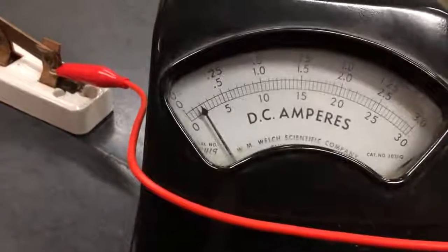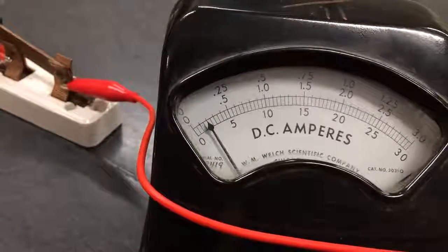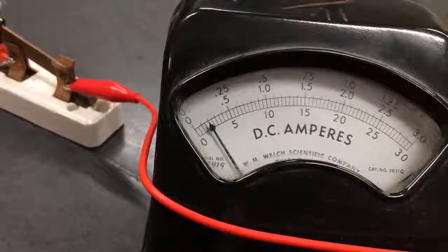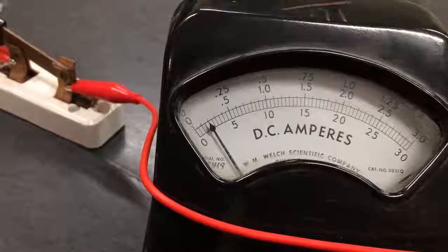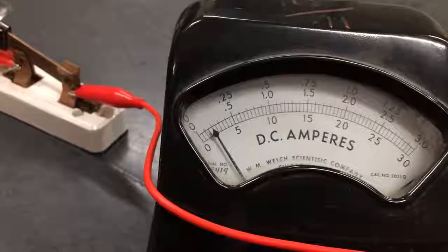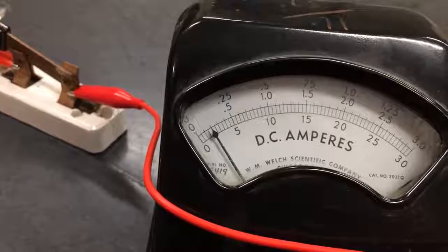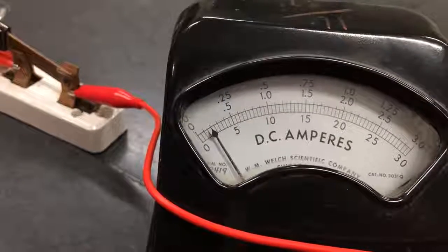So if we zoom in, we can see the needle's on the second major division. If we go by the top scale, which I hooked it up to, between zero and 0.25. So that means each major division is 0.05. And this meter is currently telling us that we have 0.1 amps, 0.1 coulombs per second.